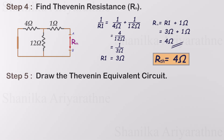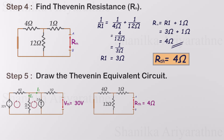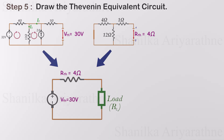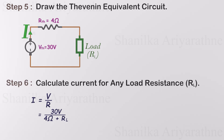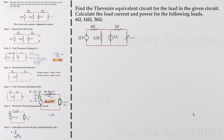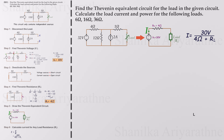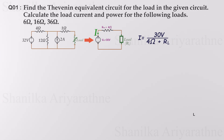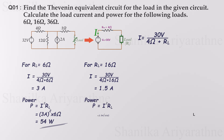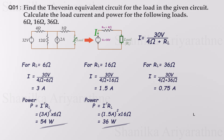Now that we've found the Thevenin voltage and Thevenin resistance, let's draw the Thevenin equivalent circuit. To finalize the process, let's calculate the current for a load with resistance R using the simplified Thevenin equivalent circuit and Ohm's law, eliminating the need to work with the original complex circuit. For a 6 ohm load, the load current is 3 amps and the load power is 54 watts. For a 16 ohm load, the load current is 1.5 amps and the load power is 36 watts. For a 36 ohm load, the load current is 0.75 amps and the load power is 0.9 watts.